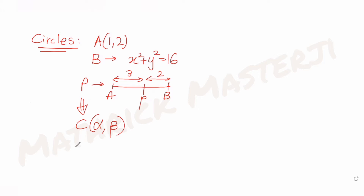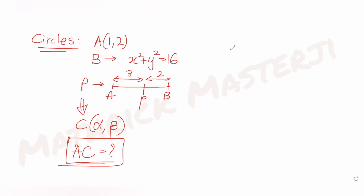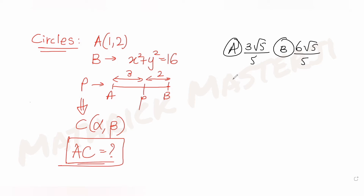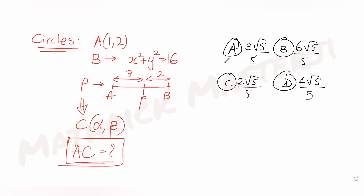The question is asking us to find the length of line segment AC — the distance between coordinates A and C. The answer choices given are: (a) 3√5/5, (b) 6√5/5, (c) 2√5/5, and (d) 4√5/5.